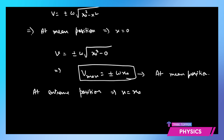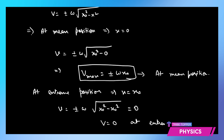At the extreme position, the equation gives v = ±ω√(x₀² − x₀²) = 0. Therefore, at the extreme position velocity is equal to zero. This confirms what we know for simple harmonic motion: velocity is maximum (ω x₀) at the mean position and zero at the extreme positions.